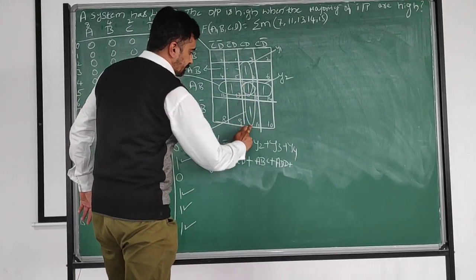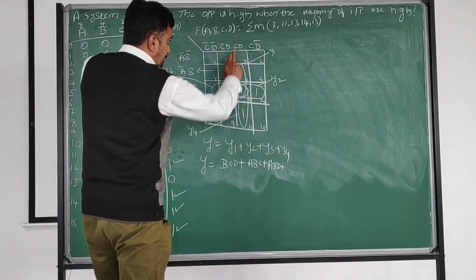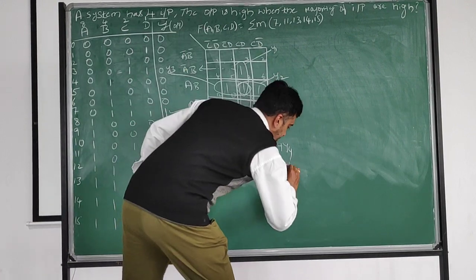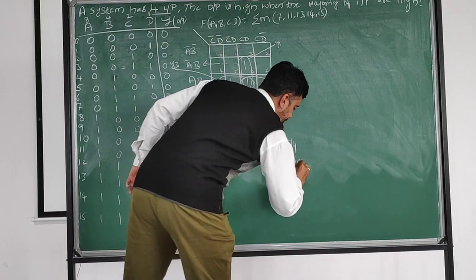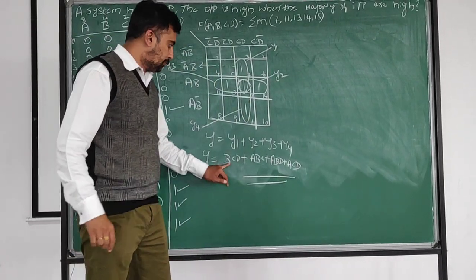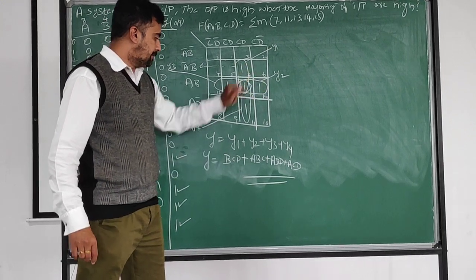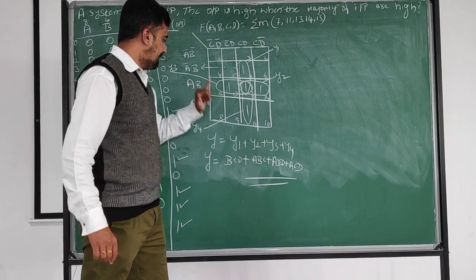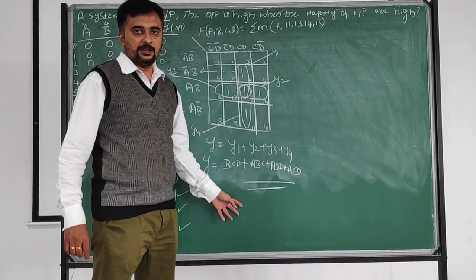For y3: only one cell, two elements. B-D and upper C-D. For y4: B-D-bar cancel, remaining is A. The final answer is: y equals BCD for y1, ABC for y2, ABD for y3, ACD for y4.